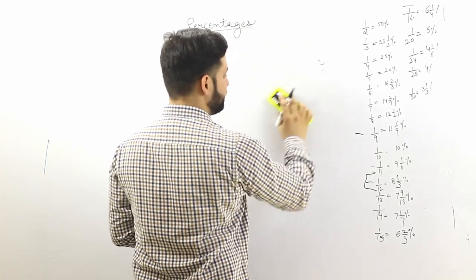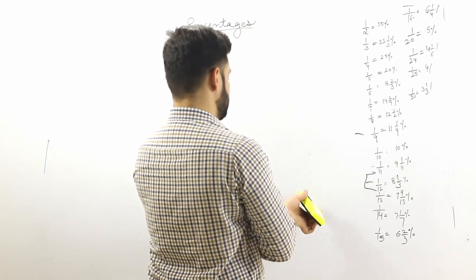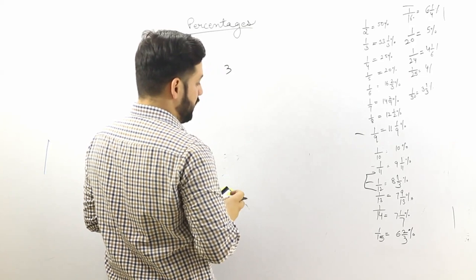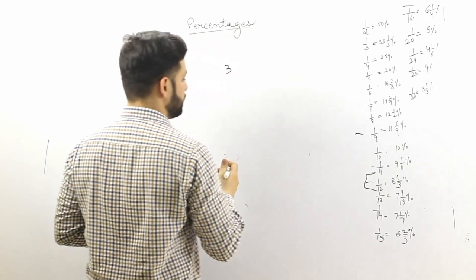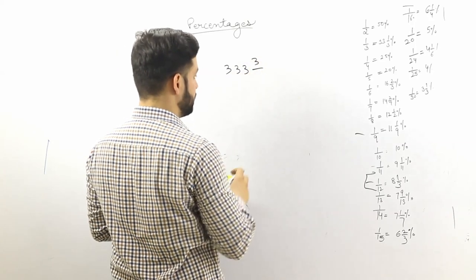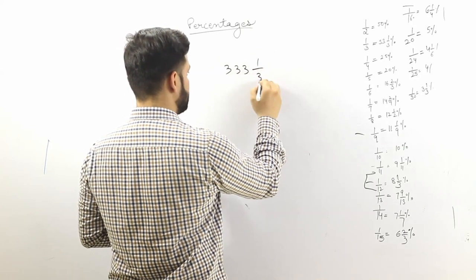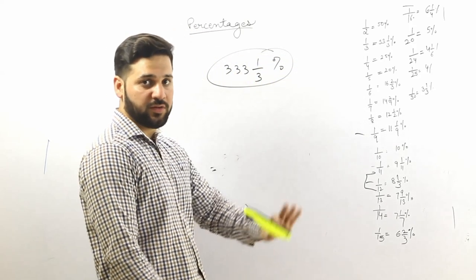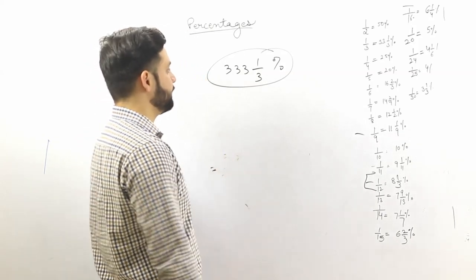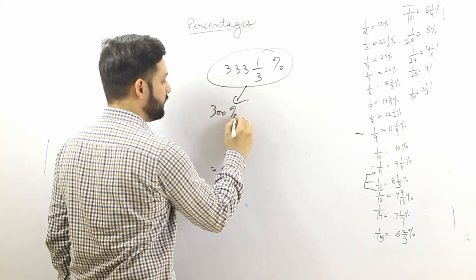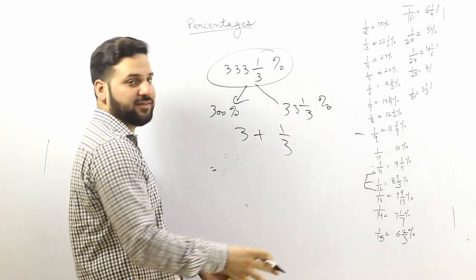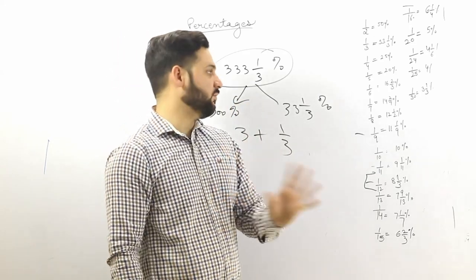Here's a simple example for you to solve. Convert 333 and 1/3 percent into a fraction. Pause the video and try it yourself. The answer: 300 percent is 3, and 33 and 1/3 percent equals 1/3. So the answer is 3 and 1/3, or 10/3.